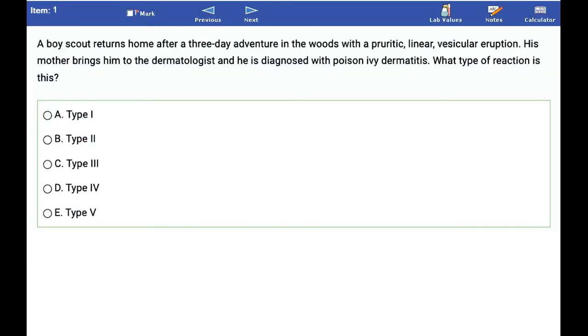A boy scout returns home after a three-day adventure in the woods with a pruritic, linear, vesicular eruption. His mother brings him to the dermatologist, and he is diagnosed with poison ivy dermatitis. What type of reaction is this?